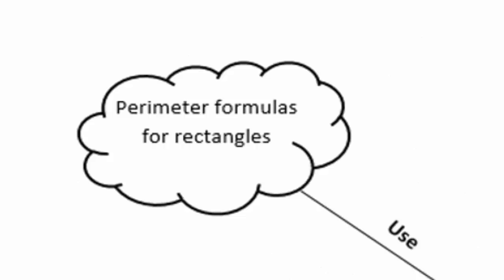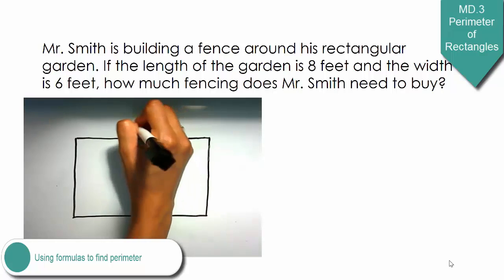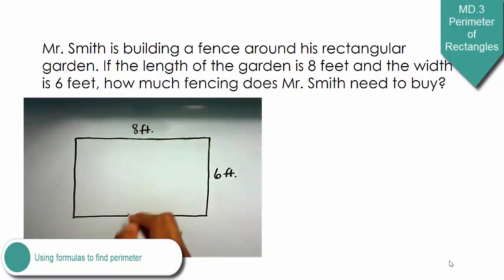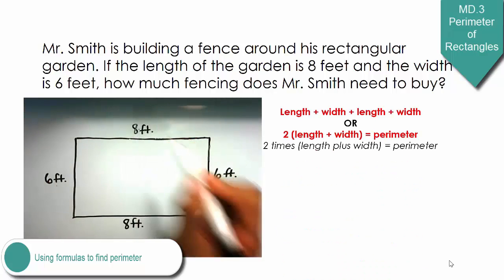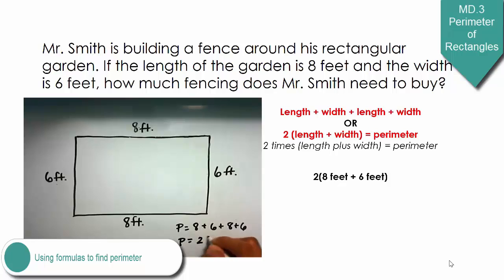Finally, students will use formulas to find the perimeter of rectangles. Perimeter is the distance around a figure. Take a look at this problem. Mr. Smith is building a fence around his rectangular garden. If the length of the garden is 8 feet and the width is 6 feet, how much fencing does Mr. Smith need to buy? This problem only provides students with the measurement of two sides of the figure, the length and the width. However, students should know the opposite sides of a rectangle are congruent or the same length. To find the perimeter, students can add the sides length plus width plus length plus width or add the given length and width and multiply by 2. In this case, 8 plus 6 equals 14. 14 times 2 equals 28. The perimeter is 28 feet.